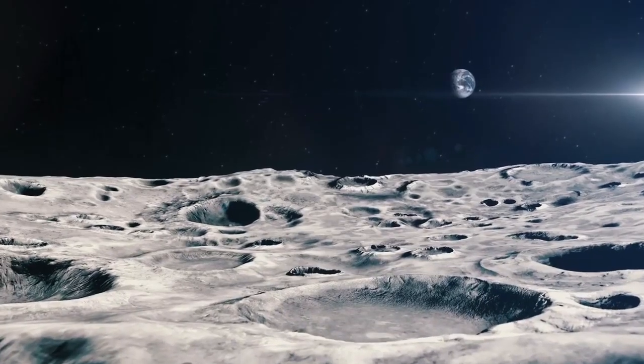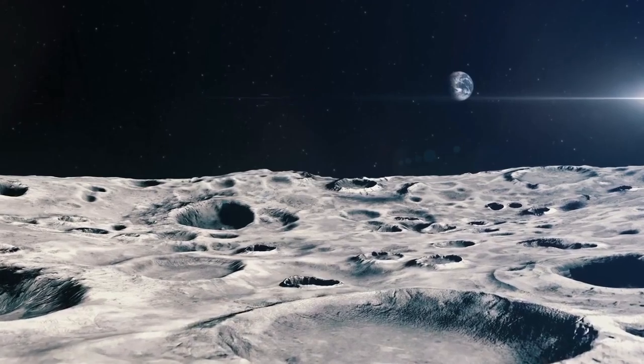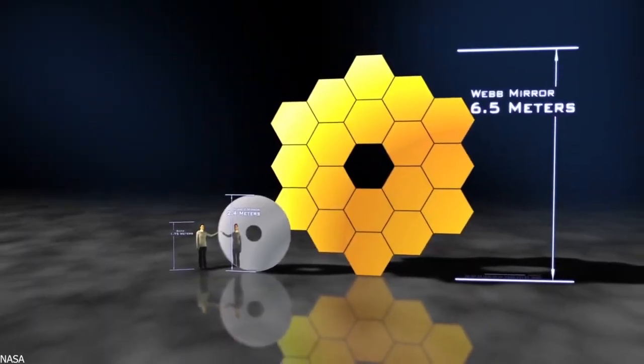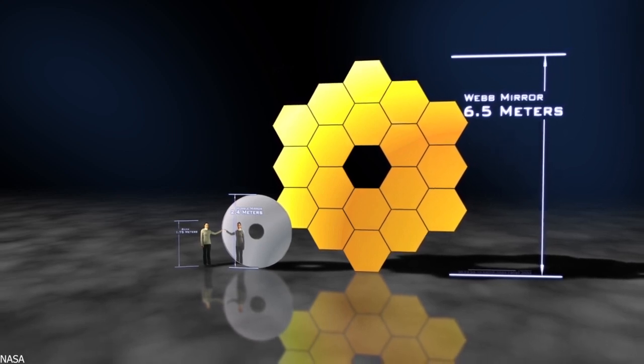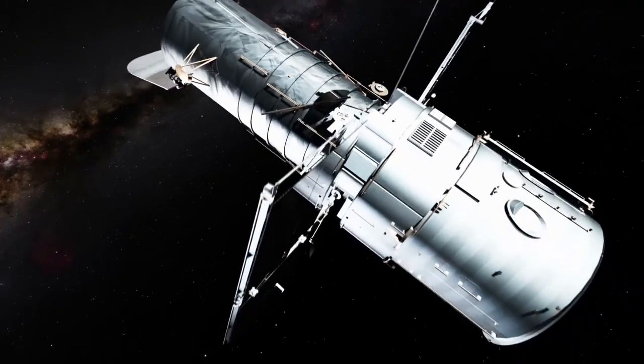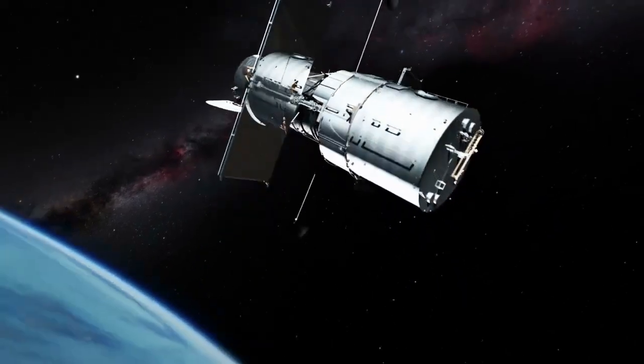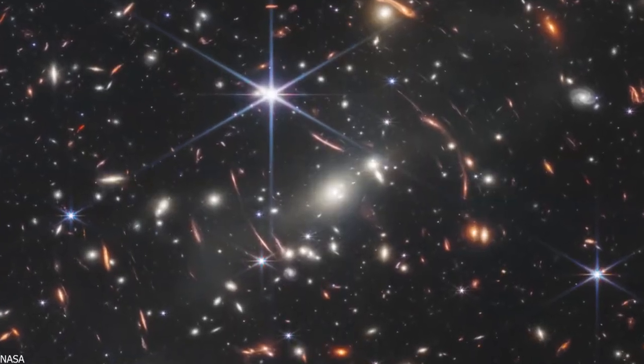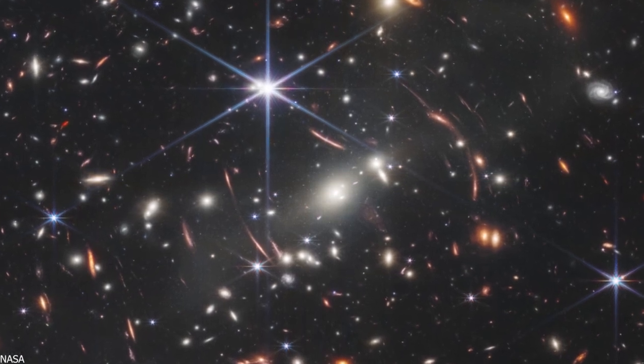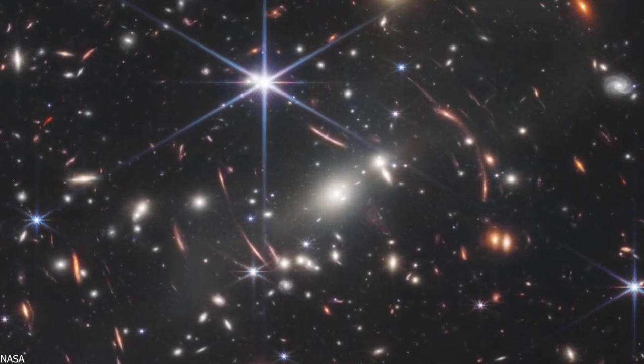The JWST has a primary mirror of 6.5 meters, or 21.3 feet in diameter, a field of view 15 times larger than the Hubble Space Telescope, and can detect extremely faint infrared light from objects in the early universe that existed as far back as 13.4 billion years ago.